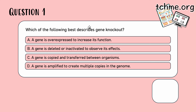Which of the following best describes gene knockout? A: a gene is overexpressed to increase its function — no. B: a gene is deleted or inactivated to observe its effect — yes, that's what gene knockout is, we're removing that gene to see its outcome. C: a gene is copied and transferred between organisms — no. D: a gene is amplified to create multi-copies — that's the opposite of what we want. The answer is B.